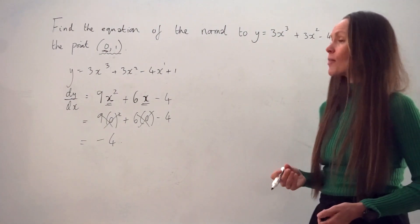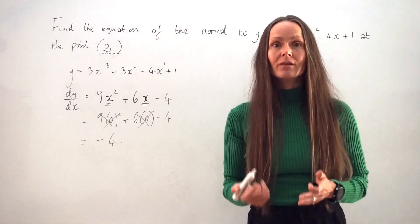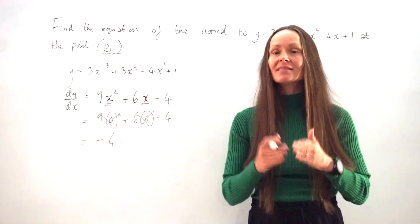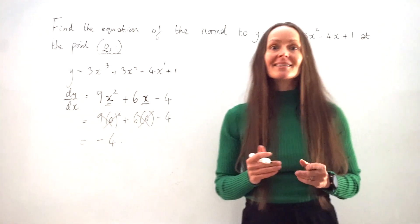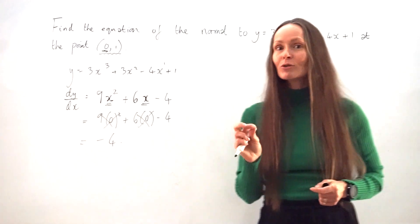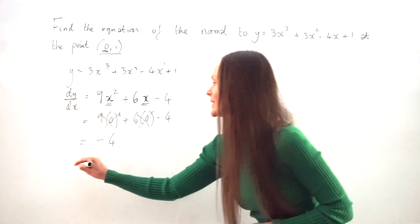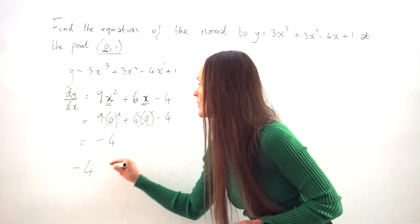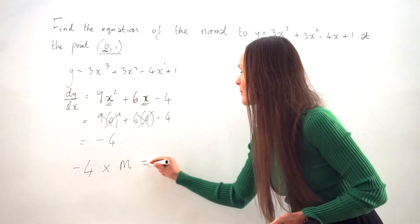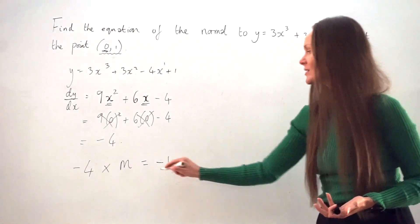So we now need to work out the gradient of the normal. And remember, I said the normal, this straight line, always has a gradient that's perpendicular. So at 90 degrees to the curve. So what you need to remember is that when two lines are perpendicular to each other, their gradients always multiply together to give negative 1. So if we take this gradient here, negative 4, and we times it by m, so a gradient that we need to work out, the answer when we multiply the two gradients together always has to be negative 1. This is a rule.